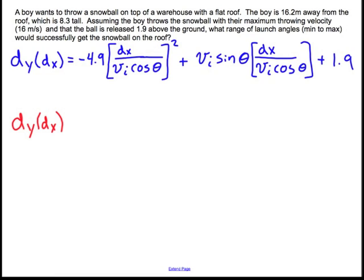So here's my function, and it's going to be equal to, I'm going to have a numerator and a denominator. I've got negative 4.9 times dx squared. I've distributed that in. Then I have vi squared cosine squared theta. Plus notice that I have this vi canceling with that one. That's kind of nice.